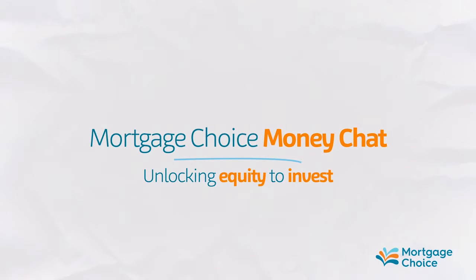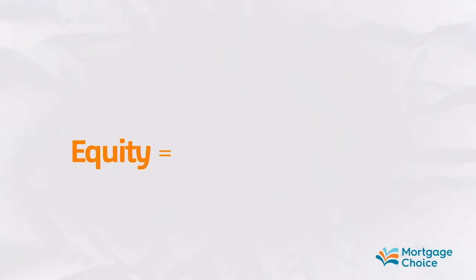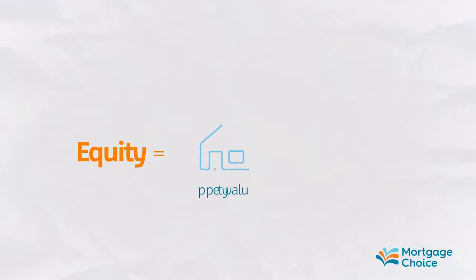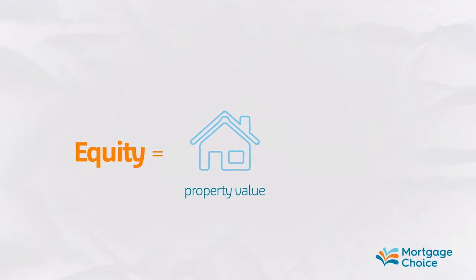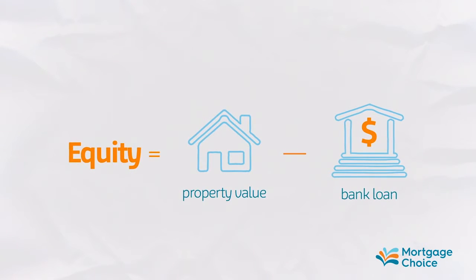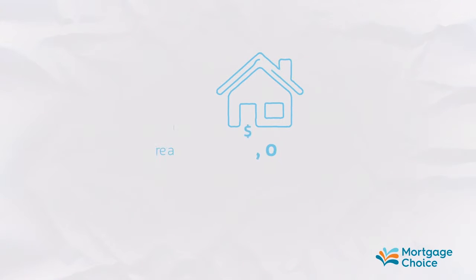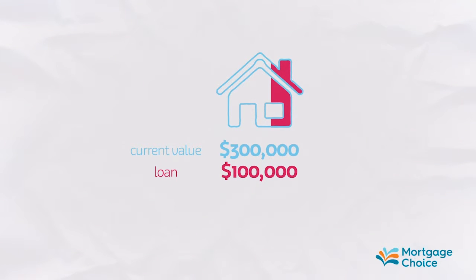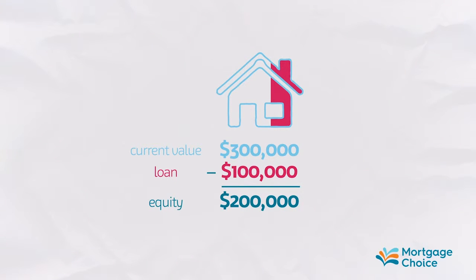Unlocking equity to invest. Equity is the difference between what your home is worth and what you owe to the bank. For example, if your home is worth $300,000 and you owe $100,000, you have $200,000 in equity.